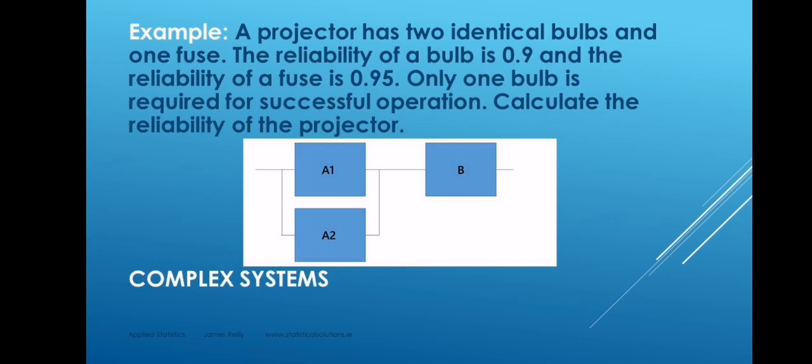Now most systems will be complex arrangements of components. And so we say it's a complex system when it has subsystems. The way we deal with subsystems is that we treat each subsystem as a component in its own right. So we begin by exploring the reliability of each subsystem, and then we regard that subsystem as a component with a known reliability. So here we have a case of a projector which has two bulbs and one fuse. Only one bulb is required for successful operation. So as long as the bulb subsystem operates, then we're okay as far as bulbs are concerned. And then of course we also need the fuse to operate.